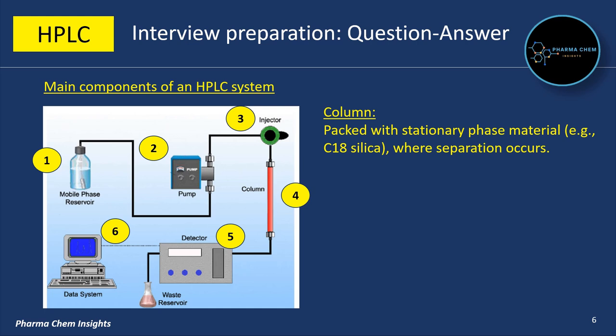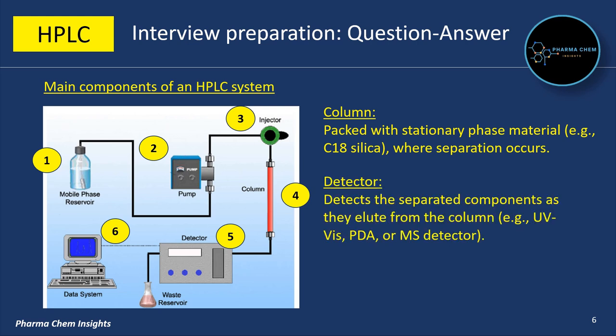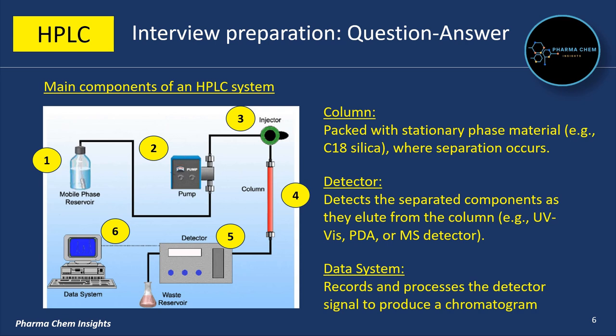The column is also called the heart of the HPLC system. It is packed with stationary phase material such as C18 silica, where actual separation occurs. The detector detects the separated components as they elute from the column — examples include UV-Visible detector, PDA detector, or MS (mass spectrometry) detector. The data system records and processes the detector signal to produce a chromatogram.